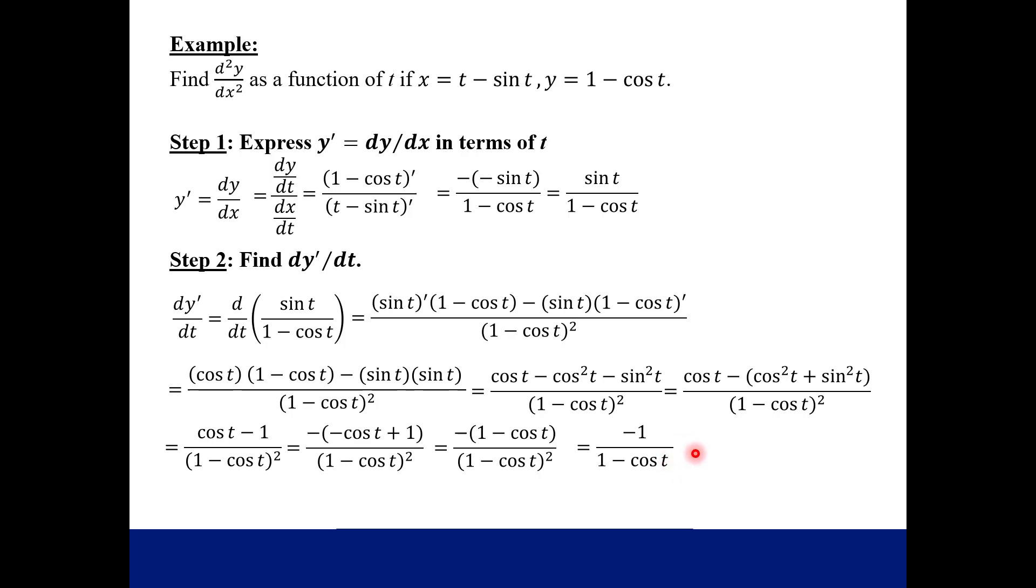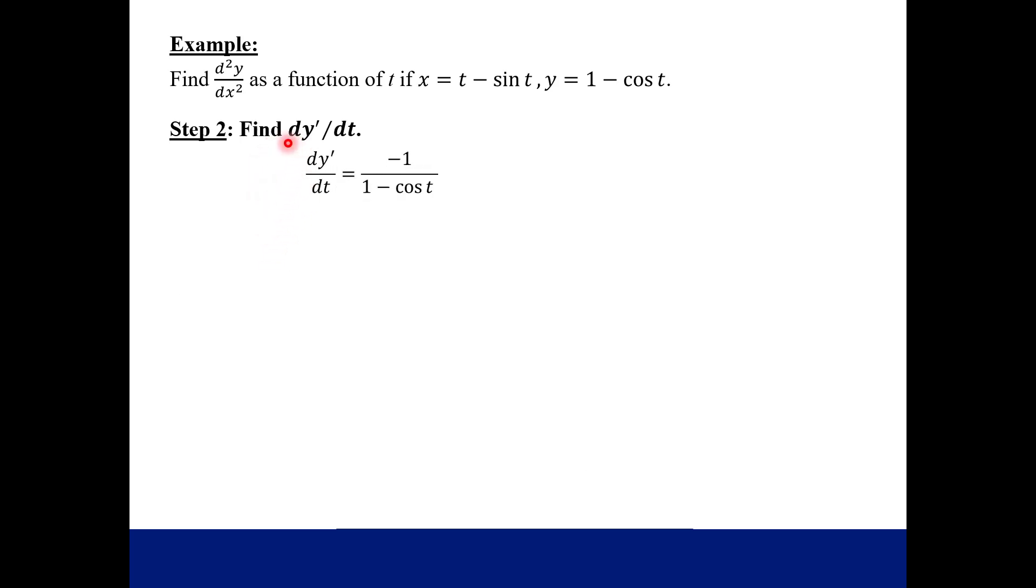So this is almost to the end, but we have one more step. So we're going to take this answer so far and keep going. So we found our derivative of y prime with respect to t, but now we need to find the derivative with respect to x. So now we're going to go back to the fact that these were parametric equations. And so we're going to divide what we just found, the derivative of y prime with respect to t, by the derivative of x with respect to t.